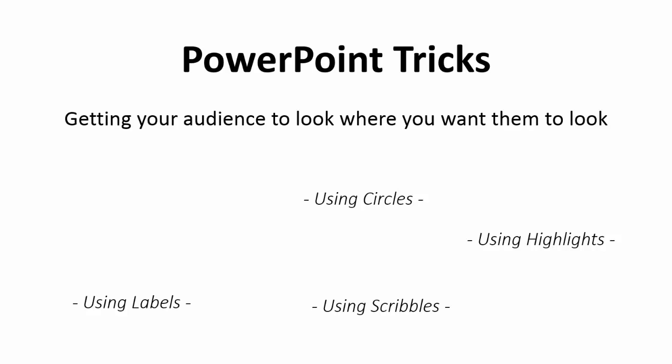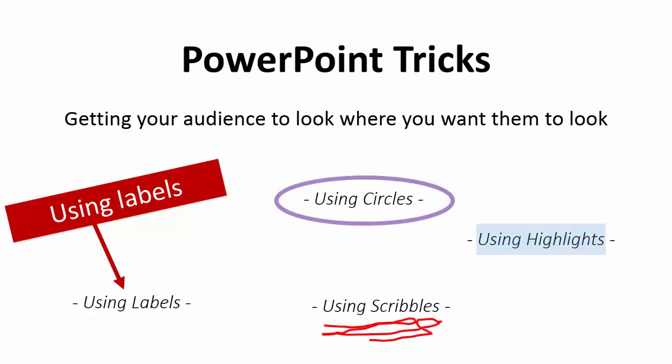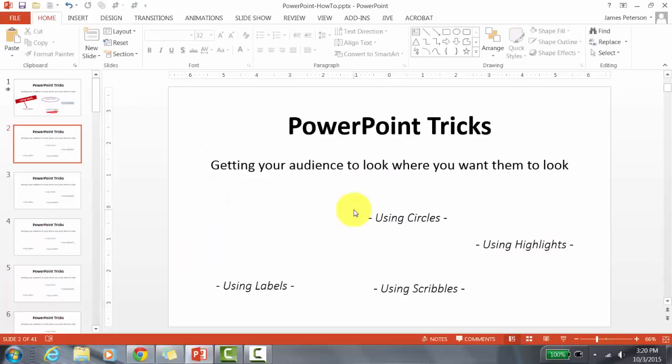Hello everyone, this is James here and today I'm going to show you some PowerPoint tricks for getting your audience to look where you want them to look. Specifically I'm going to talk about using labels, using circles, using highlights, and using scribbles. These are simple techniques which I use in most of my PowerPoint presentations and in many of these videos. Let's take a look at how to make labels.